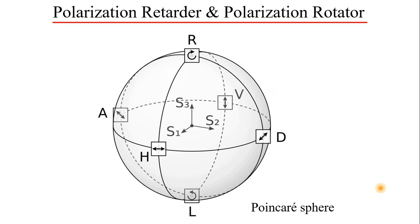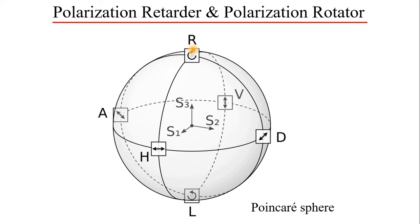In polarization optics, we can write everything on the Poincaré sphere. Any polarization state can be represented on the Poincaré sphere. We have linear polarization on the equator, and right and left circular polarization on the south and north poles. Any elliptical polarization is between the poles and the equator — closer to the poles means closer to circular polarization, closer to the equator means closer to linear. Points include horizontal, 45 degrees, vertical, and minus 45 degrees. There are two main optical elements: the rotator, which rotates parallel to the equator, and the retarder, which rotates from the equator toward the poles.